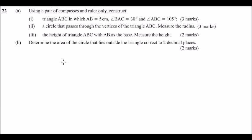Roman numeral 1: triangle ABC in which AB is equal to 5 cm, angle BAC is equal to 30°, and angle ABC is equal to 105°. So here you are being tested whether you know how to construct angle 30° and how to construct angle 105°.